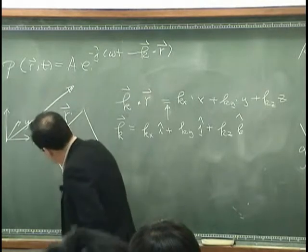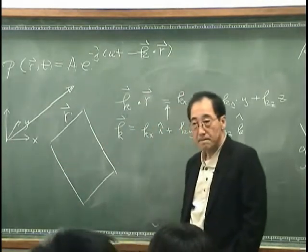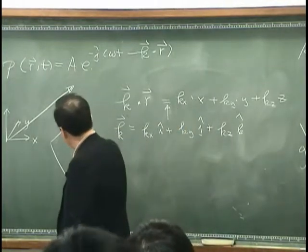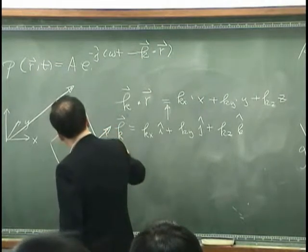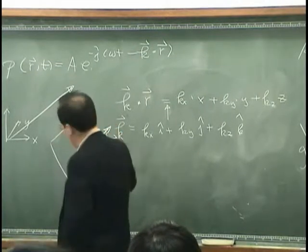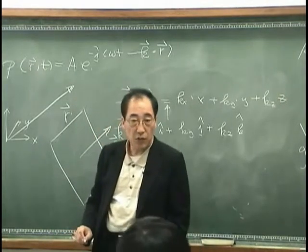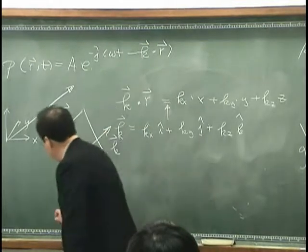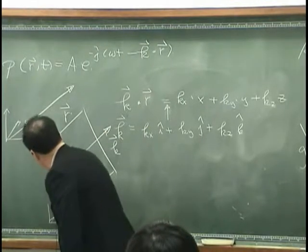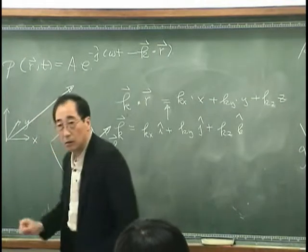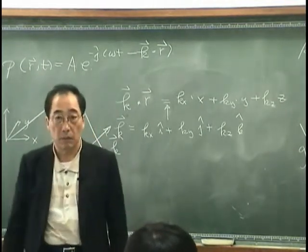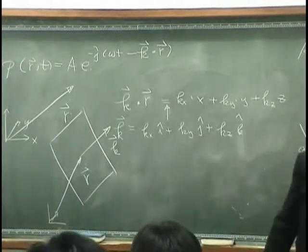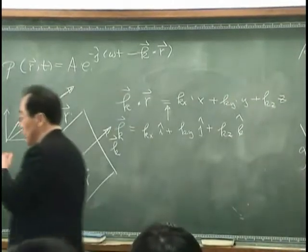Suppose I have this kind of plane, and the K vector is normal to this plane. That is the direction of propagation. If I have a coordinate over here and this is the R vector, that certainly explains the propagation vector.